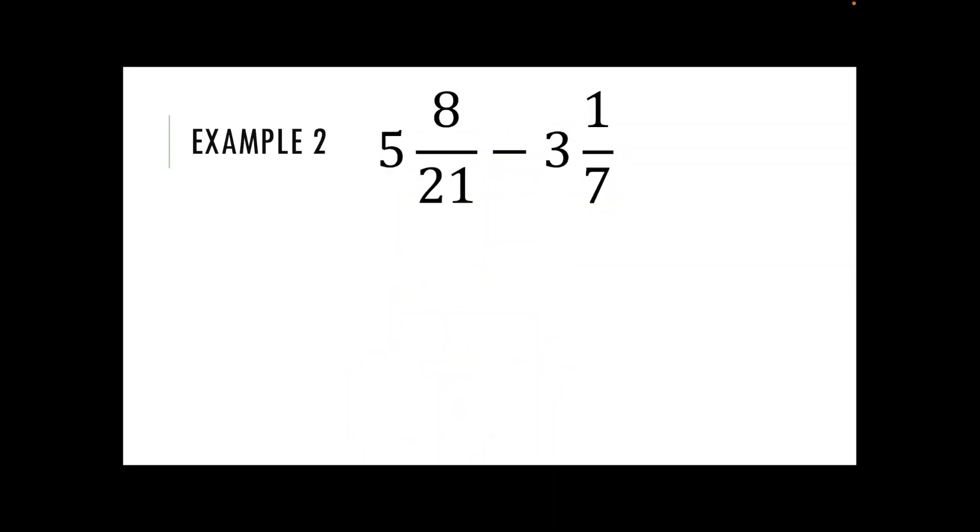For example two then we are going to do the same thing. So start with my five take away the three to leave me with two. I've then got eight over 21 and take away one over seven.